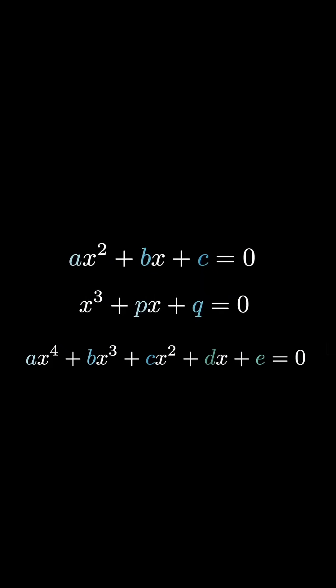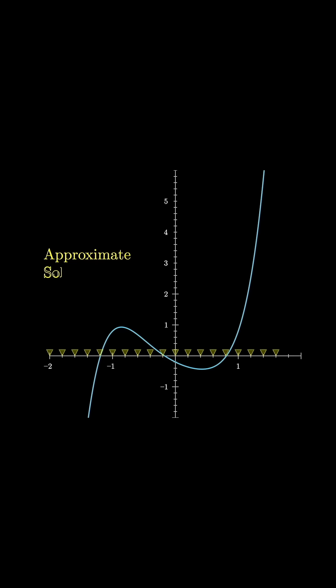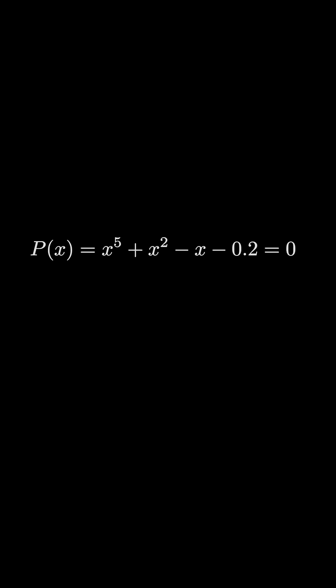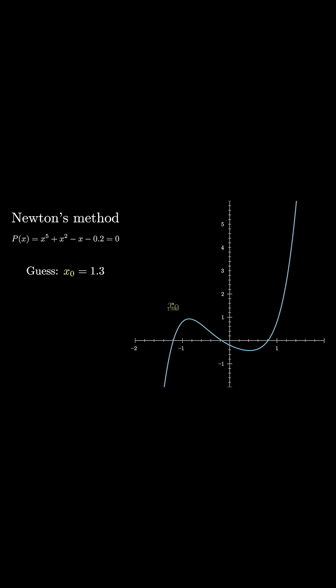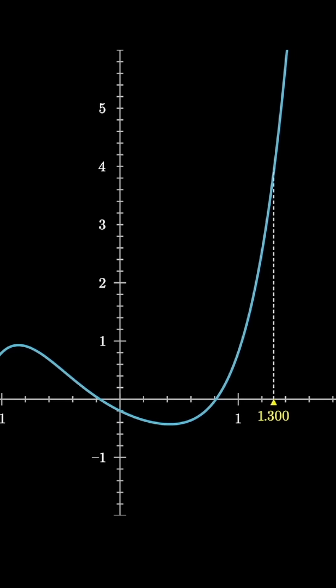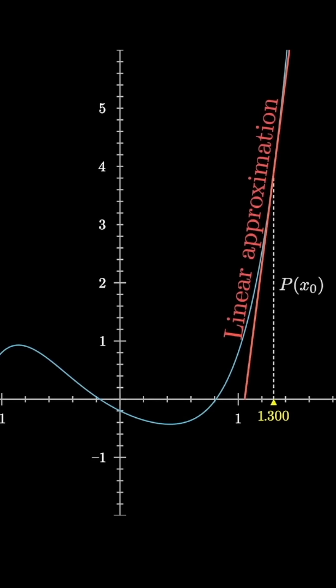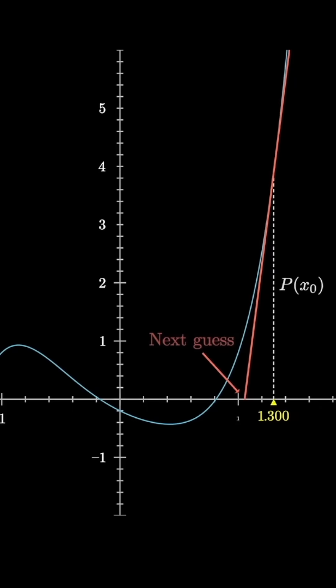A lot of math is about solving equations, and Newton's method is a really powerful tool for finding approximate solutions to essentially any equation. If you rearrange the equation so that it looks like setting some function of x equal to 0, then visually what it means to solve such an equation is to find a point where the graph of that function crosses the x-axis. The way Newton's method works is to start by making an arbitrary guess, and the guess is almost certainly not a solution, but if you draw a tangent line to the graph at that guess and ask where does that tangent line intersect the x-axis — something much easier to solve explicitly — very often it takes you closer to a true solution.